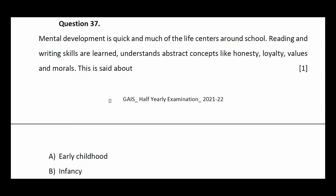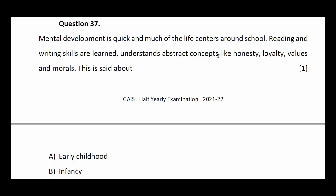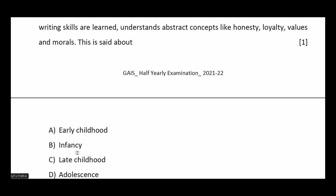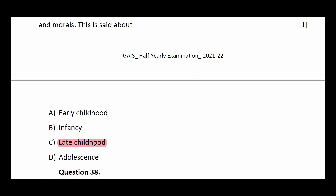Question number thirty-seven: mental development is quick and much of life centers around school. Reading and writing skills are learned; the individual understands abstract concepts like honesty, loyalty, values, and morals. This is said about: early childhood, infancy, late childhood, or adolescence. The answer is late childhood.